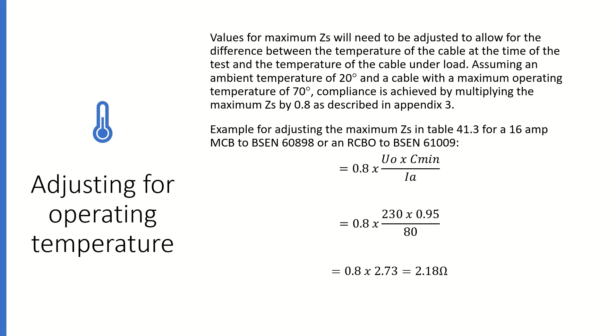So here is an example for adjusting the maximum Zs in table 41.3 for a 16-amp MCB to BS EN 60898 or an RCBO to BS EN 61009. So by multiplying 0.8 by the formula I mentioned earlier, Uo times Cmin divided by Ia, that basically reduces the Zs in table 41 by 20%. So that gives us a figure of 2.18 ohms.